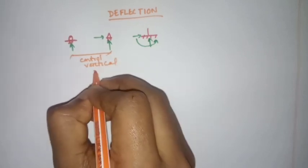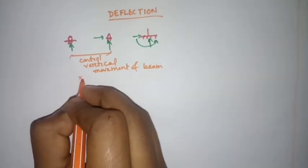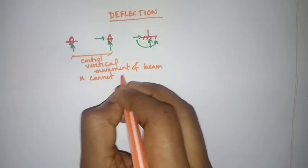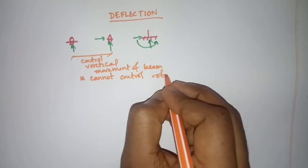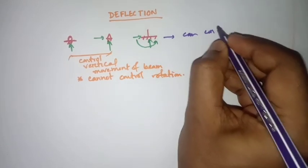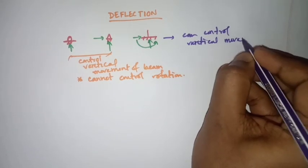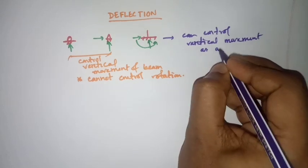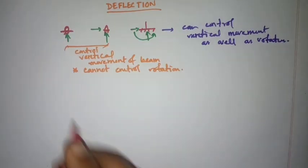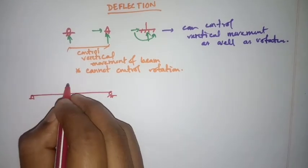The roller and pin supports can control the vertical movement of the beam but cannot control rotation. The fixed support can control both vertical movement as well as rotation, because it resists rotation.